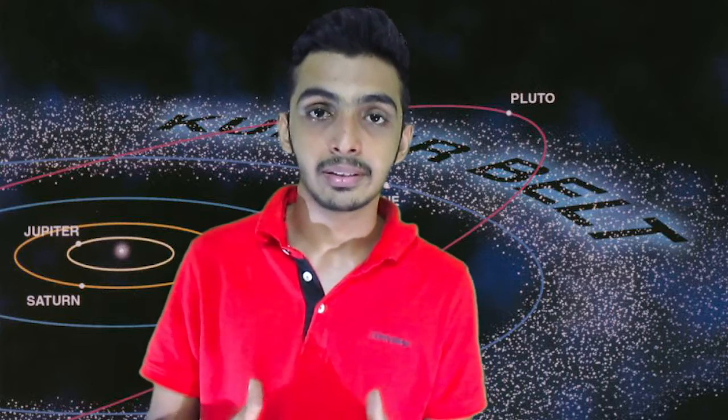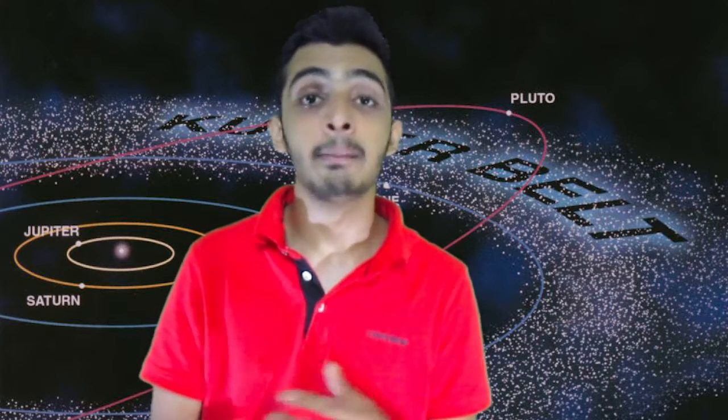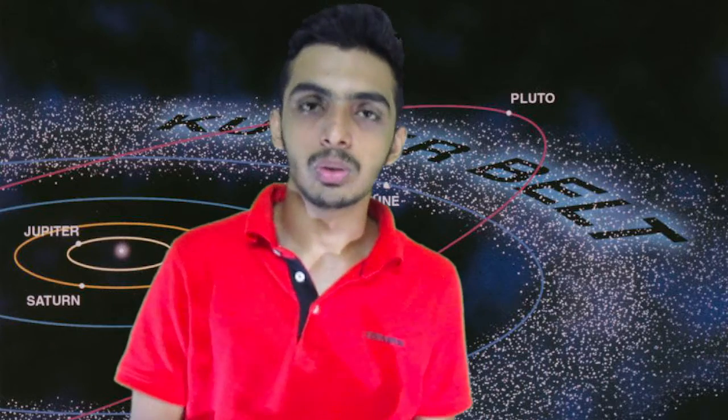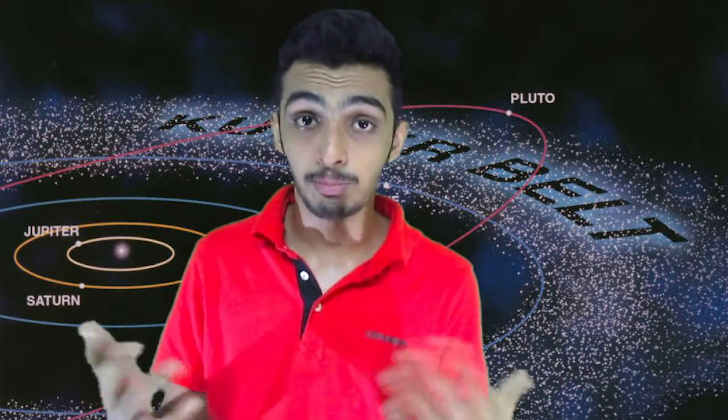The last thing is that it should also clear its neighborhood in which it orbits. For example, Pluto is now a dwarf planet. Why? Because it goes around the Sun, so it obeys the first rule. It has sufficient mass to become a round spherical object, which clears the second rule. But it lies in the Kuiper belt where there are many asteroids having the same mass and size as Pluto, so it does not pass as a planet and hence it's called a dwarf planet.